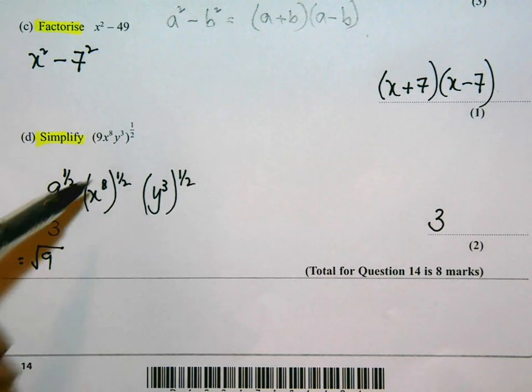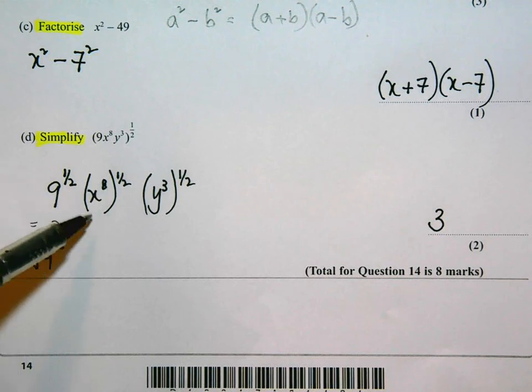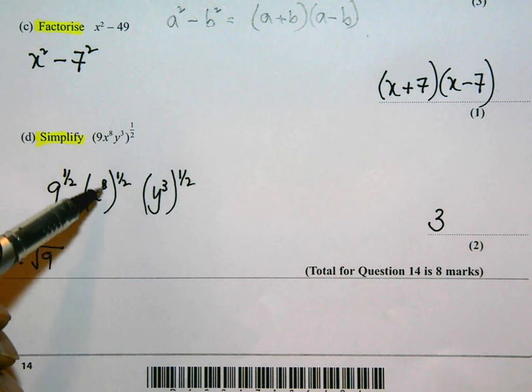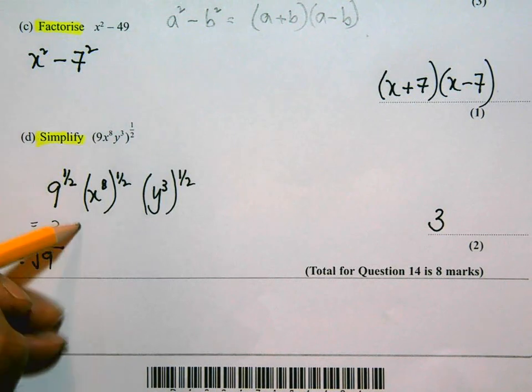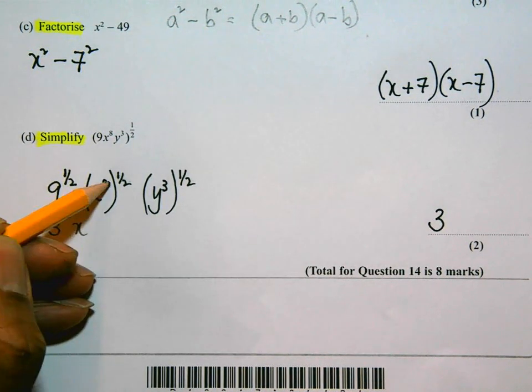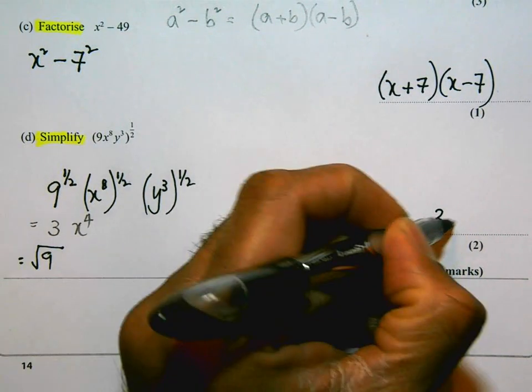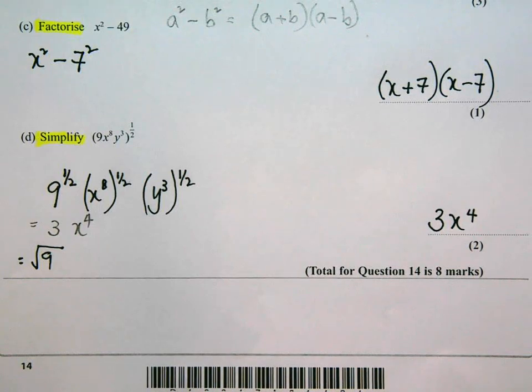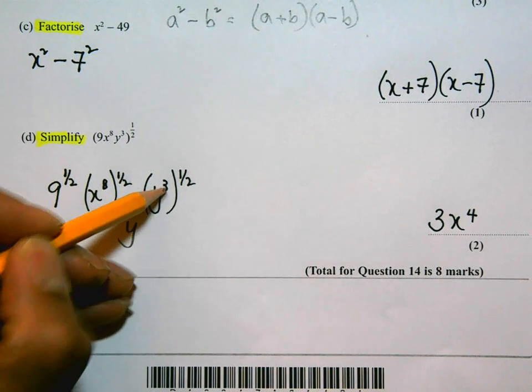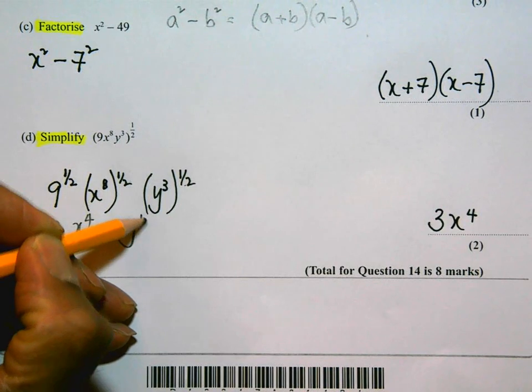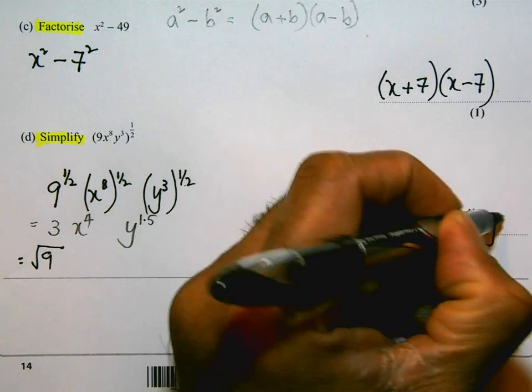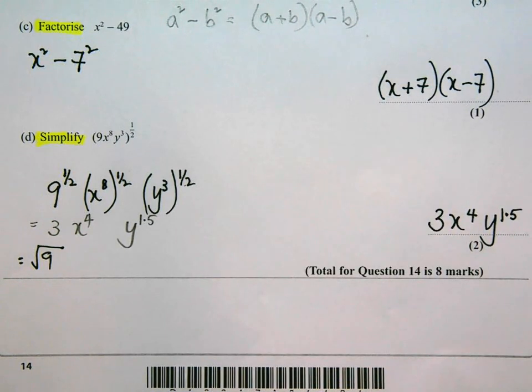When I have something with a power all to a power, so a power of a power, we times the powers together. So this is going to become x to the power of 8 times a half, or a half of 8, that's going to be 4. So it's going to be x to the power of 4. And then at the end I'm going to have y 3 times a half. 3 times a half or half of 3 is 1.5 or 1 and a half. So the last part is y to the power of 1.5, or you could write that as 3 over 2, or even 1 and a half. This last part, part D, not a lot of people answer this correctly. Take your time, think about it, break it down in stages, look at what I've done here, and make sure you do this. And overall you can see this question is worth 8 marks. Make sure you can get it, especially those of you doing higher and aiming for the higher grades, make sure you can do all of it.